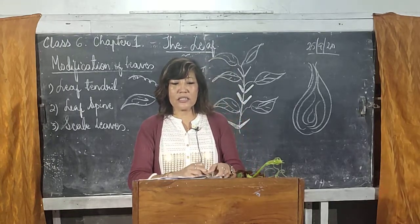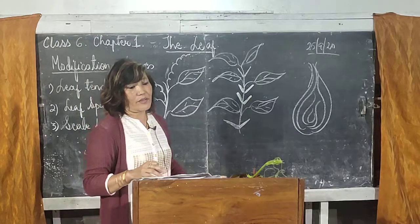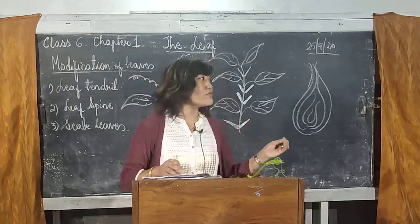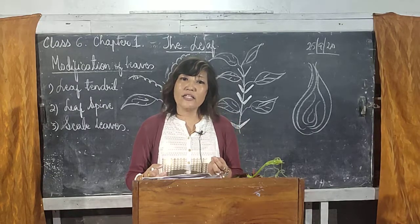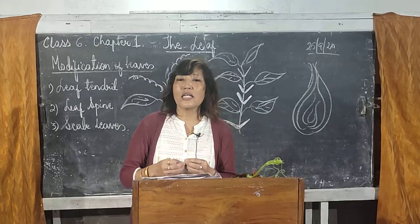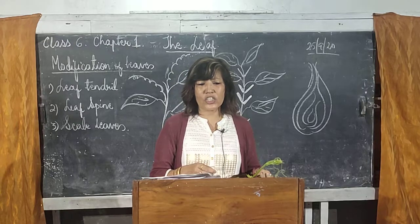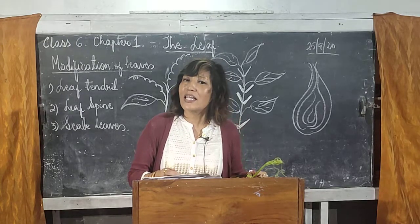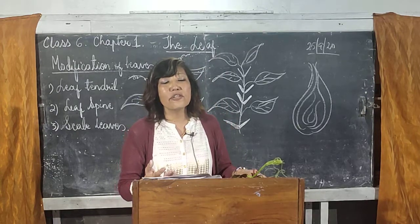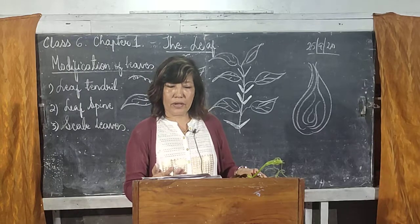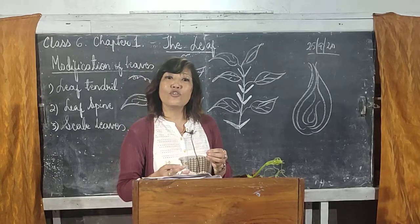The third modification of leaf is the scale leaves. The function of scale leaves is to protect the axillary buds which are present in the axil of a plant, and also to store food and water. In some plants, the leaves are modified into scale leaves.